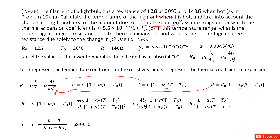We put all of them inside and simplify. We can see the term 4L0 divided by pi D0 squared times rho0 can be replaced by R0. From this function we can solve for temperature T, and inputting all the given quantities, we get the temperature at 2,400 degrees Celsius. Part one is solved.